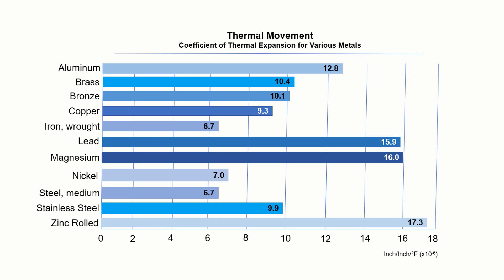Metals do not expand and contract at the same rates, which is why it's very important to know what you're working with to ensure your roof is properly designed to accommodate for thermal movement. As you can see in this chart, various metals move at different rates. Let's compare the two most common materials used for roofing applications.